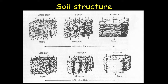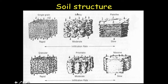Soil structure can be split up into six major classifications, starting with single grain and going clear down to a massive structure. Single grain is where we have individual particles that are very, very small and allow very rapid infiltration of water. A blocky structure is where the particles get a lot bigger and tend to create more total space within a soil sample, but the infiltration rate is really moderate because water has to find its way in between these bigger particles for infiltration to happen. Then the slow plate-like soil structure is where we see sheets of soil.